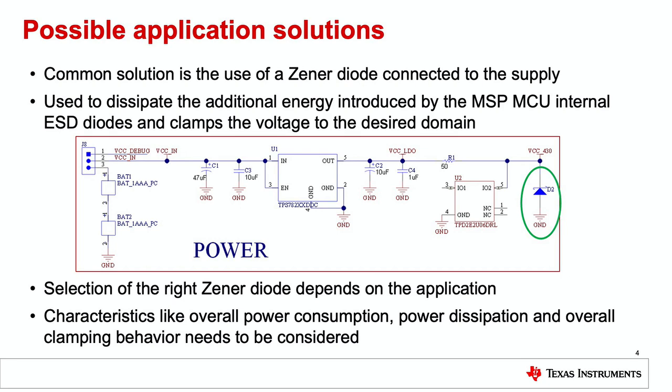The best would be to prevent this overvoltage condition, but as a safety net a simple Zener diode to the supply can be used to dissipate the additional energy and make the whole application more robust. The selection must be done according to the application requirements and characteristics like overall power consumption, clamping behavior, and power dissipation.